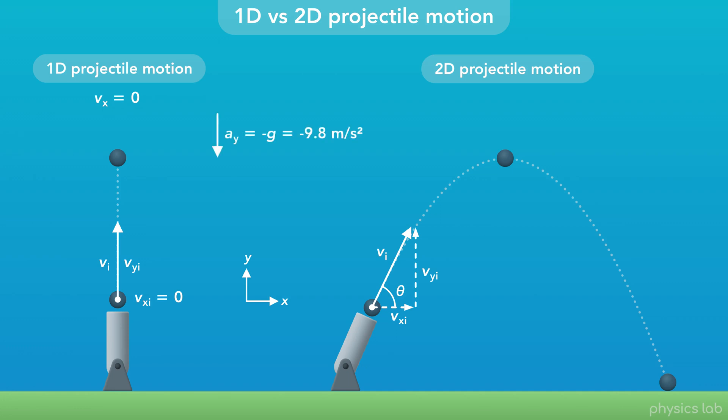The acceleration in the y direction is always 9.8 meters per second squared downwards. But there's no acceleration in the x direction. Ax is 0. So, the horizontal velocity, vx, is constant the entire time. The final x velocity at any time is the same as the initial x velocity.